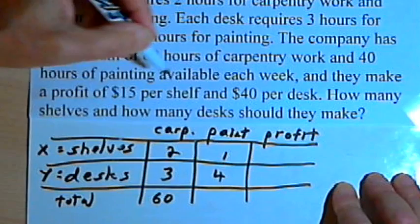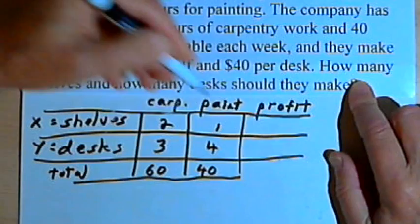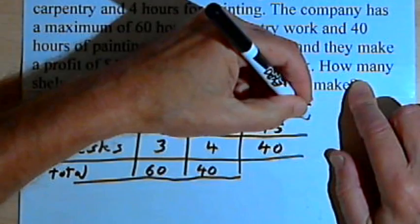And they've got a total of 40 hours for painting. They make a profit of $15 per shelf and $40 per desk.